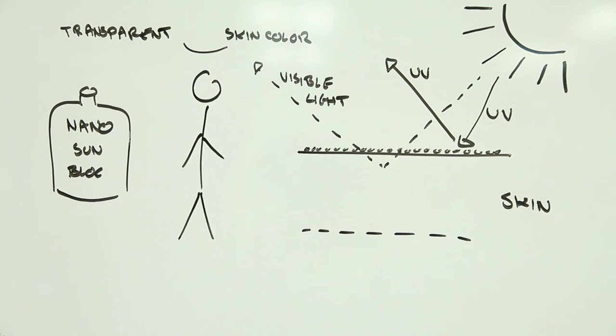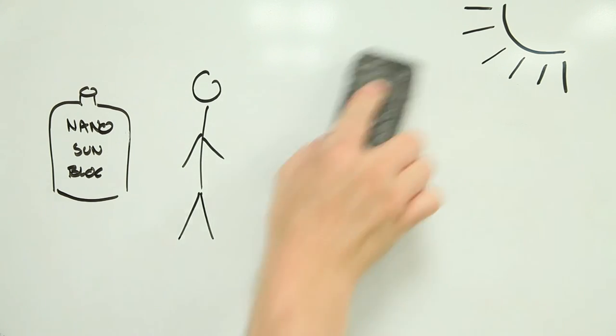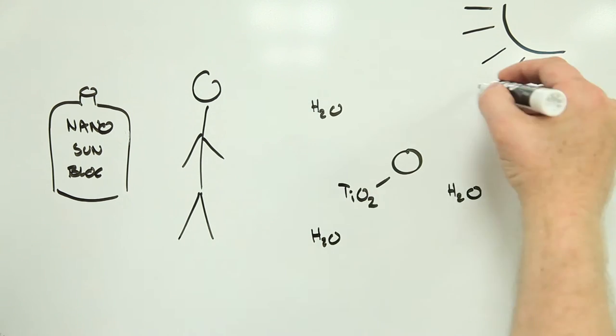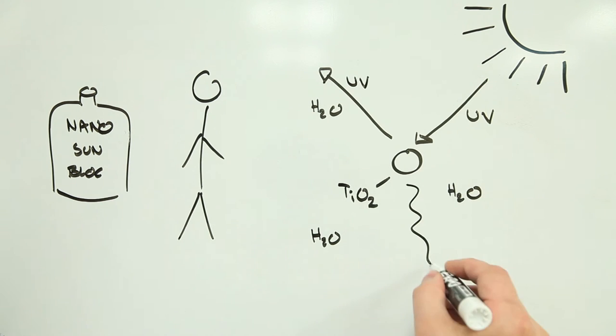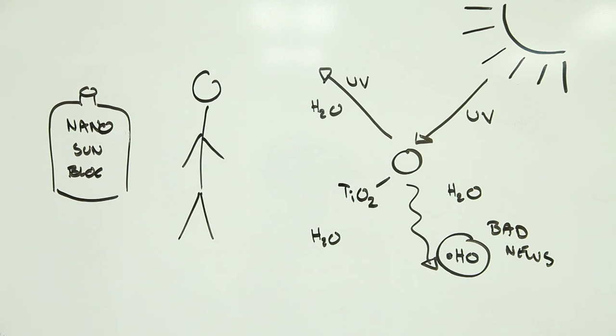Apart from one small problem. Nano-sized titanium dioxide particles are photoactive. Mix them with water and ultraviolet light and they produce free radicals, highly reactive chemicals that you really don't want to be exposed to. This isn't great news for the skin. But it also isn't great news for the product, as the free radicals also kill long-term performance.